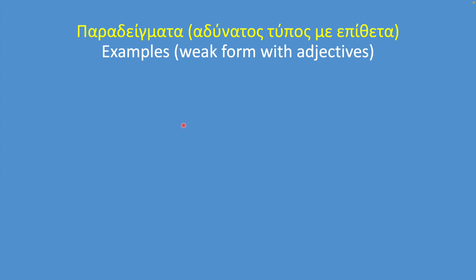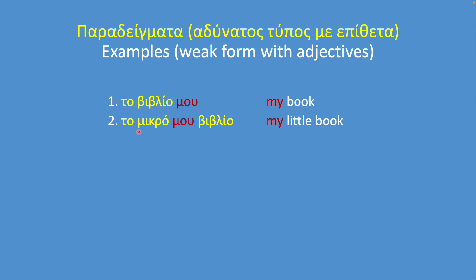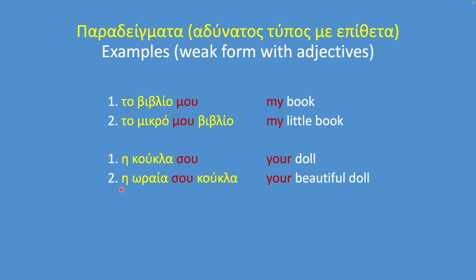Now, what happens with a possessive pronoun if there is an adjective that refers to and describes the noun? Let's take a look. Το βιβλίο μου — my book. If we want to say 'my little book': το μικρό μου βιβλίο. As you can see, the weak possessive pronoun is placed between the adjective and the noun. Another example: η κούκλα σου — your doll. For 'your beautiful doll': η ωραία σου κούκλα. Again, the weak possessive pronoun is placed between the adjective and the noun.